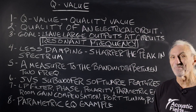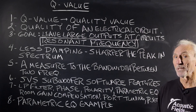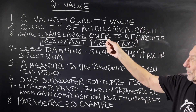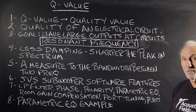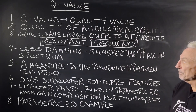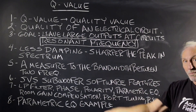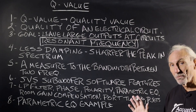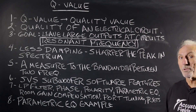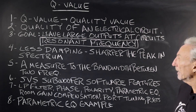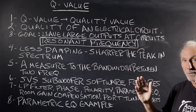I'm sure you've heard this term or seen it in the literature, but not really understood what it meant or how you can apply it to your particular sonic situation. Q value simply means quality value — quality of an electrical circuit. It was first used as a descriptive term in electrical circuits, and the goal was to get a large output at the circuit's resonant frequency — as much output as you can before the circuit overloads at that frequency. With this process, the less damping, the sharper the peak in the spectrum.